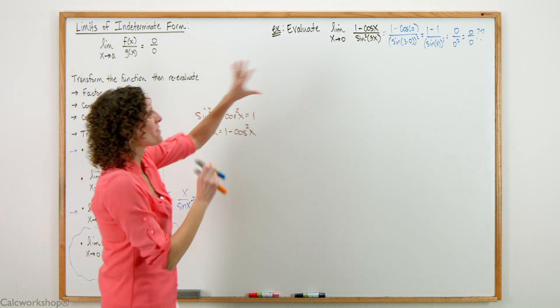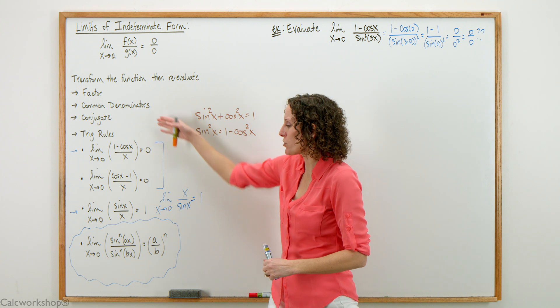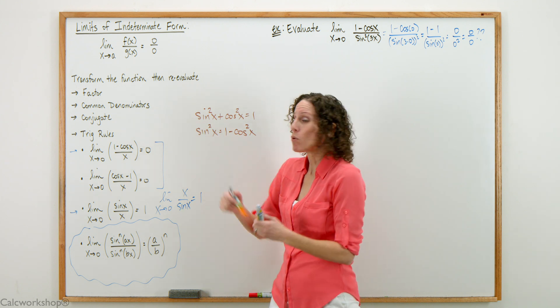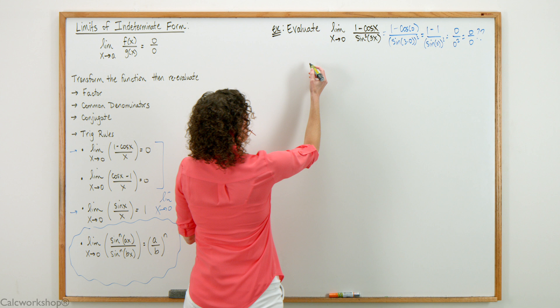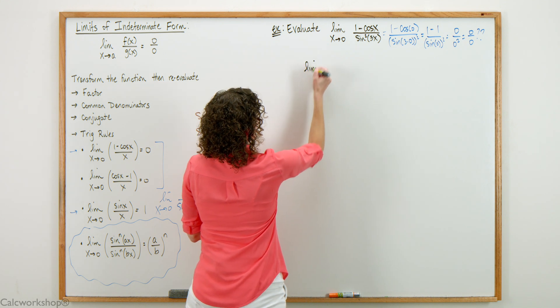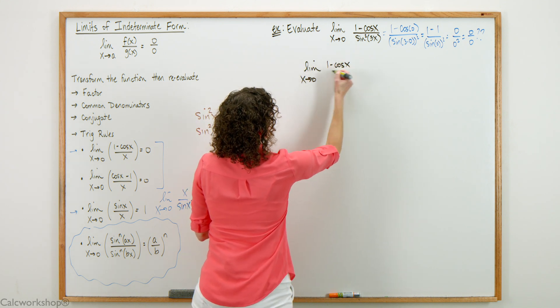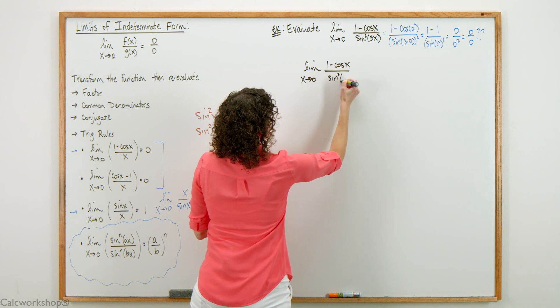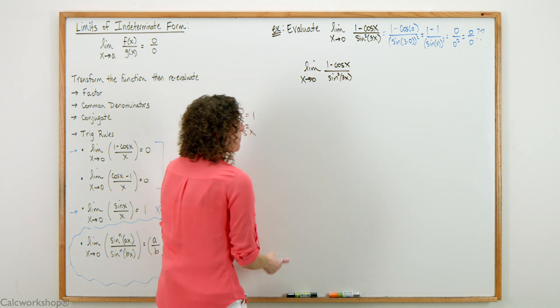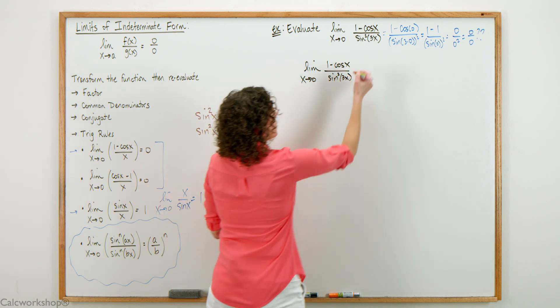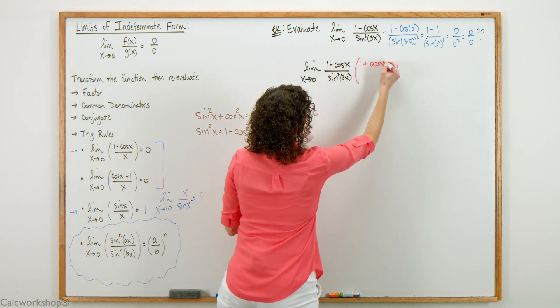This example is going to use two manipulations. We're going to use a conjugate to get to a trig. Let's apply the conjugate. We have the limit as x approaches 0 of 1 minus cosine x divided by sine squared of 3x. We're going to multiply top and bottom by the conjugate pair, 1 plus cosine x.